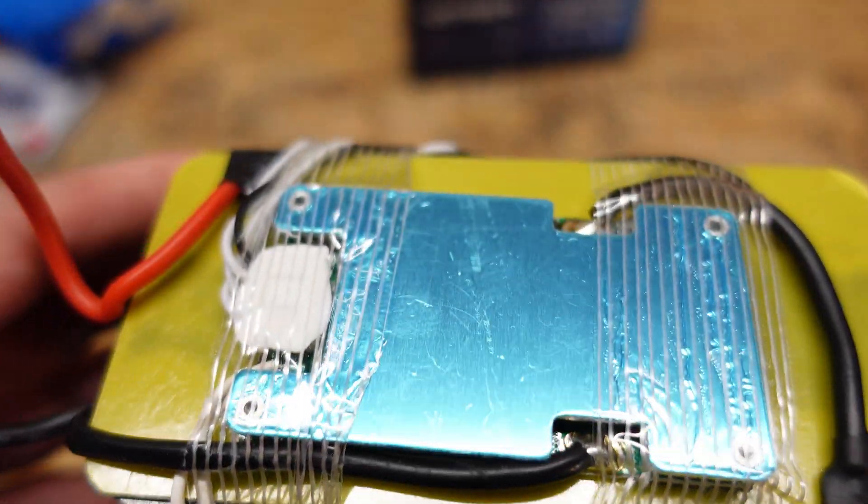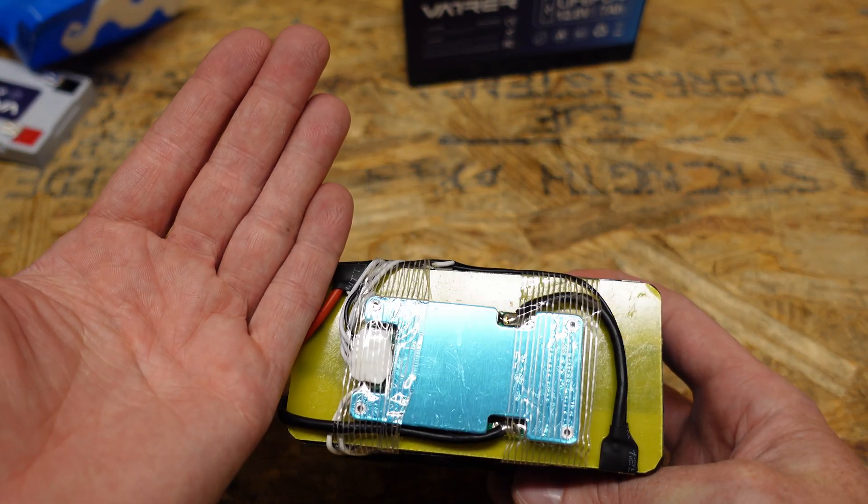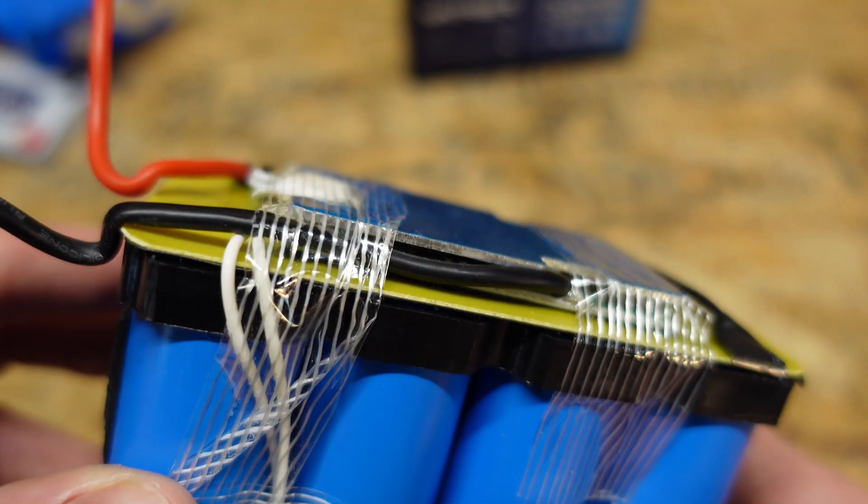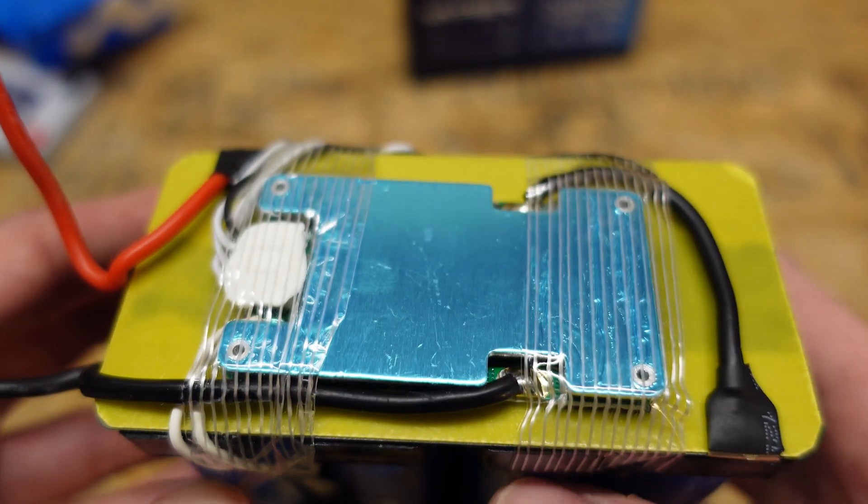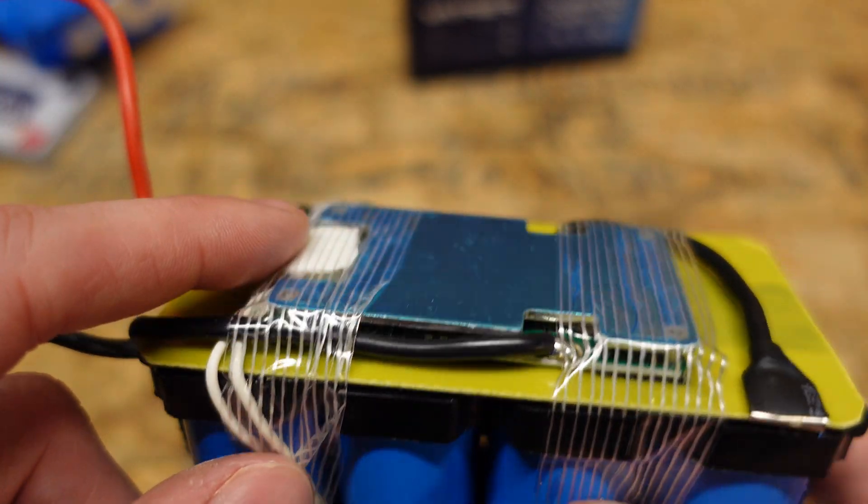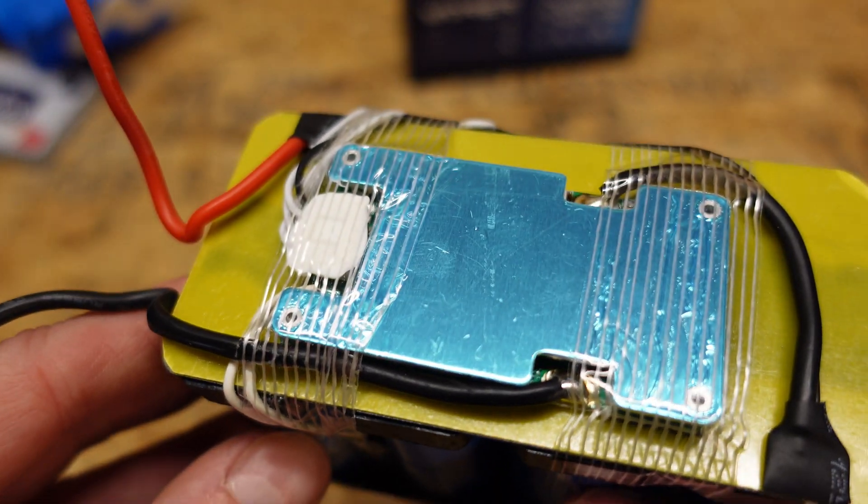That is perhaps the tiniest. And here's my hand for comparison how tiny that BMS is. But it only needs to support 7 amps. So I guess that's all you need. And honestly that heatsink on top is probably overkill for 7 amps if I had to guess.